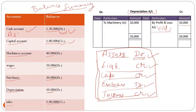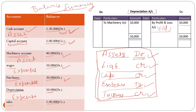Cash account is an asset, so it has a debit balance. Capital account has a credit balance. Machinery has a debit balance because it is an asset. Wages have a debit balance because wages are expenses. Purchases are expenses, so purchases have a debit balance. Depreciation is an expense so it has a debit balance. Sales are income to the business, so sales have a credit balance. From this summary of debit and credit balances we will now prepare the trial balance.